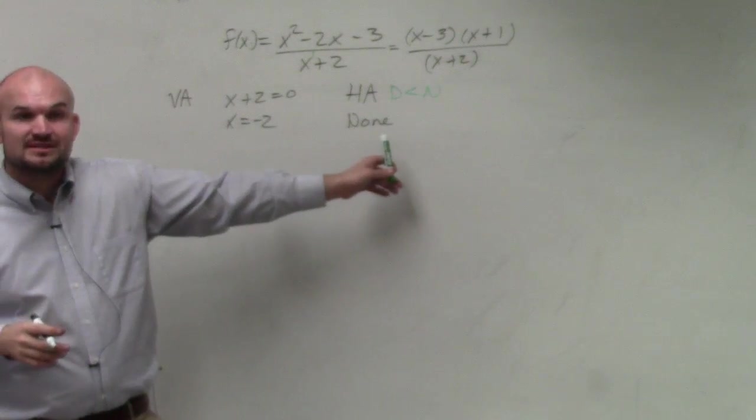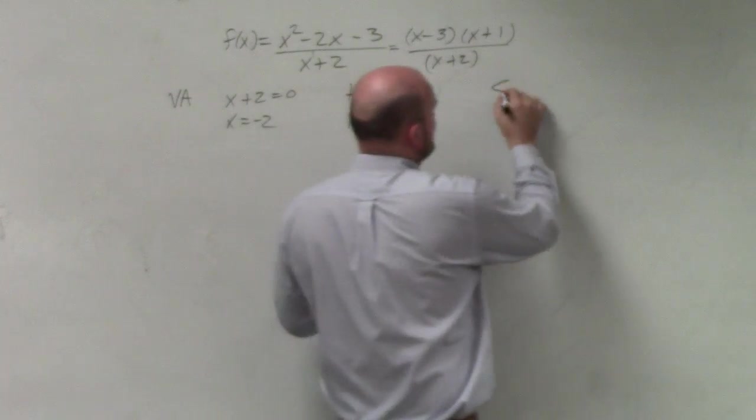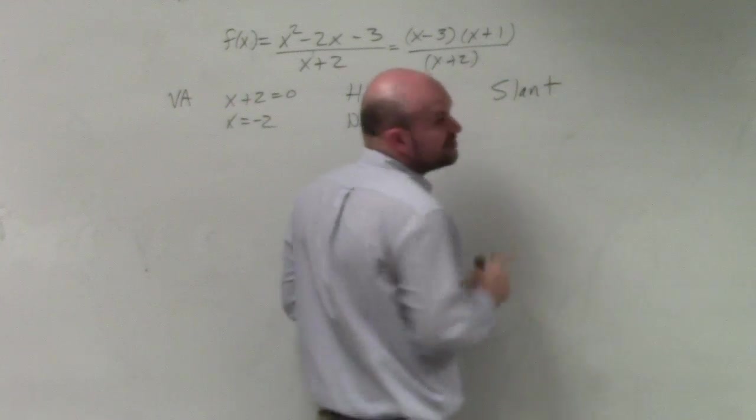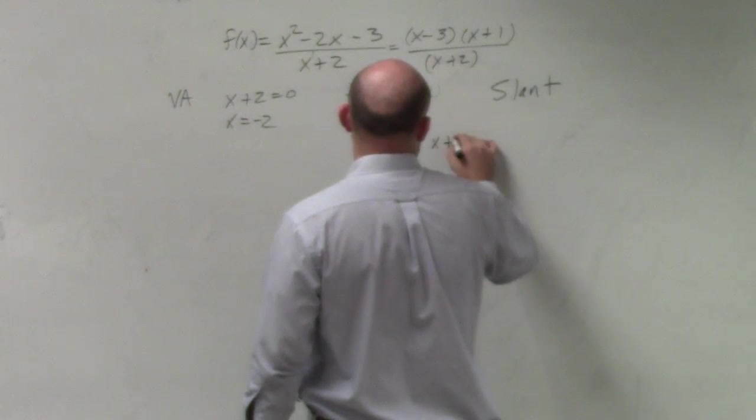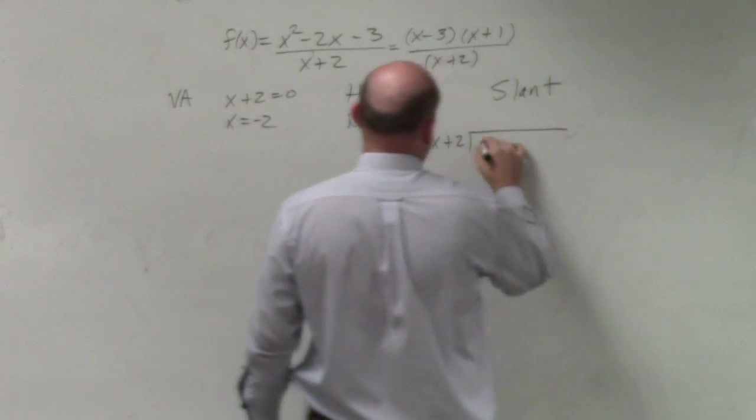But when we have no horizontal asymptote, that means we now have a slant. And what I showed you guys last class period, to find the slant asymptote, all you simply need to do is do long division with your polynomials.